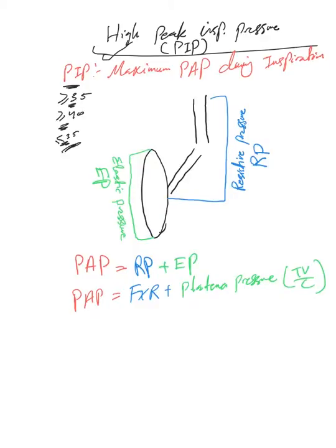35. So the alarm will go off as soon as this goes above 35, or whatever threshold you put on the ventilator—you may put it at 40 or 42. But when the alarm goes off, you have to intervene to fix why the peak inspiratory pressure is high.